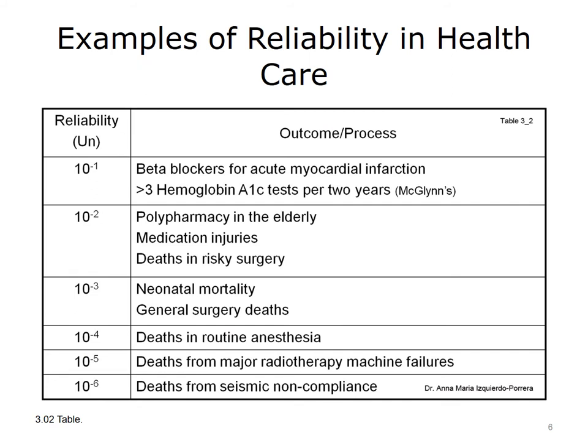The use of beta blockers for patients with acute myocardial infarction and the testing of hemoglobin A1C in diabetic patients are some of the least reliable processes. Reliability of the system improves when considering outcomes such as deaths in risky surgery, neonatal mortality, and deaths in routine anesthesia. The most reliable processes underline outcomes such as deaths from major radiotherapy machine failures or from seismic noncompliance.